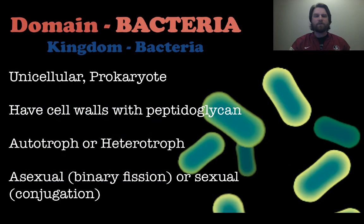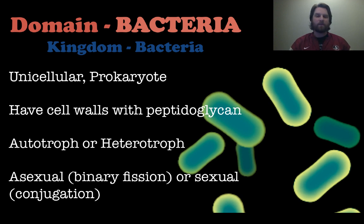The domain bacteria is also kingdom bacteria. These are single-celled prokaryotes whose cell walls do have peptidoglycan in them. When scientists create antibiotics, they take advantage of this fact — certain antibiotics will actually attack that aspect of the bacteria. Bacteria can be either autotrophic or heterotrophic, and they can reproduce asexually or sexually through binary fission or conjugation respectively.